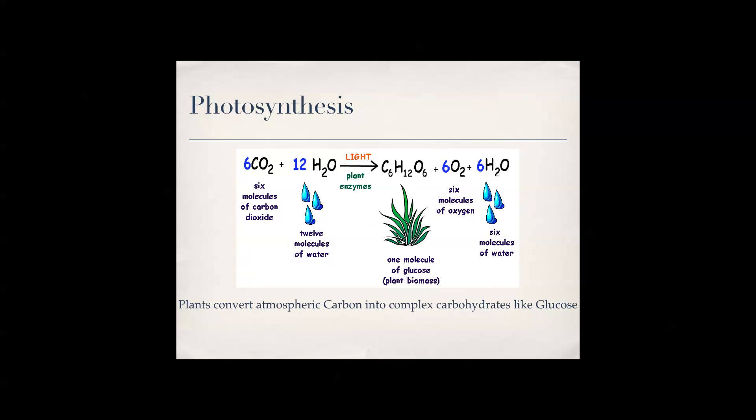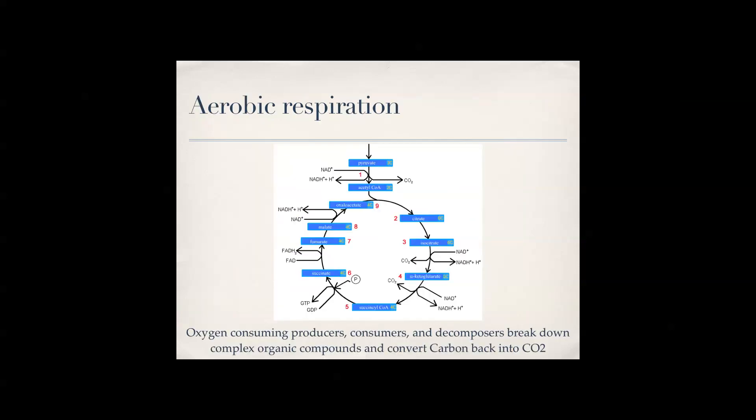Photosynthesis is when plants convert atmospheric carbon into complex carbohydrates like glucose — this is how plants get their energy to stay alive. Aerobic respiration is oxygen-consuming producers, consumers, and decomposers breaking down complex organic compounds and converting carbon back into CO2, which is how trees emit CO2 as a greenhouse gas.